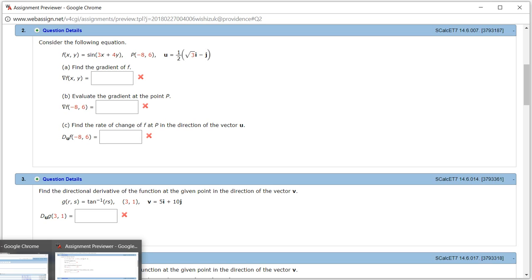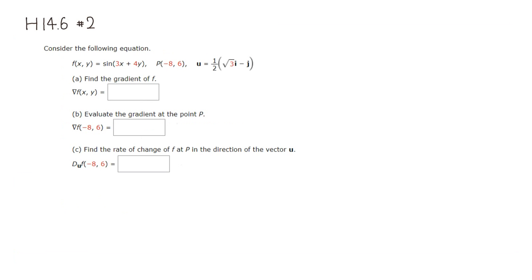Let's look at homework 14.6, problem number 2. So we have this function f of x, y, and we want to find the gradient. So we have to take the partial with respect to x first.